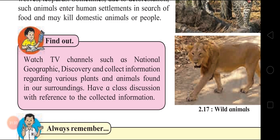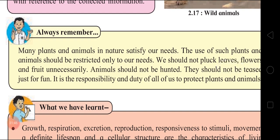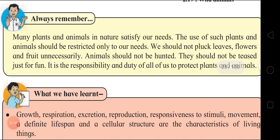Wild animals that hunt other animals for food are called predators - for example, tigers, lions, wolves, and leopards. Sometimes due to deforestation, such animals enter human settlements in search of food and may kill domestic animals or people. You must be watching National Geographic Channel and Discovery. Many plants and animals in nature satisfy our needs. We should not pluck leaves, flowers, and fruit unnecessarily. Animals should not be hunted or teased just for fun. It is the responsibility and duty of all of us to protect plants and animals.